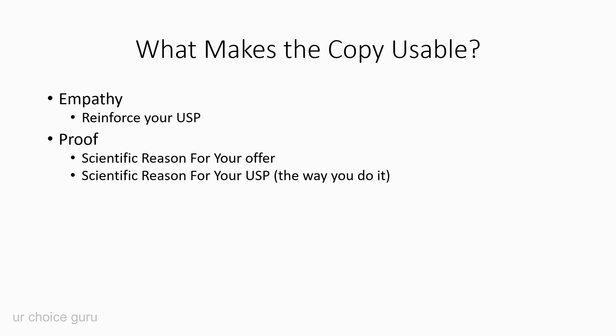You can also make your copy usable in terms of proof. What is the scientific reason they need what you're offering? But come back to the USP: what is the scientific reason you do things the way you do? If you only use organic traffic and don't rely on Facebook ads, what makes your approach necessary? You need verifiable, quantifiable evidence — this tells prospects you have credibility, you're not just winging it, there's solid evidence for why you do it the way you do.